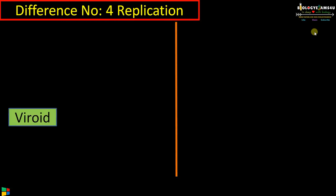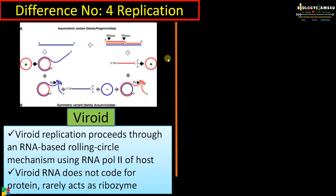Difference number four regarding replication: in viroids, replication occurs by an RNA-based rolling circle mechanism using RNA polymerase 2 of the host. Viroid RNA does not code for any protein, but it can act as a ribozyme, so it can effectively use the machinery of the host.